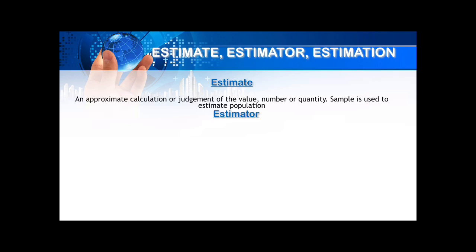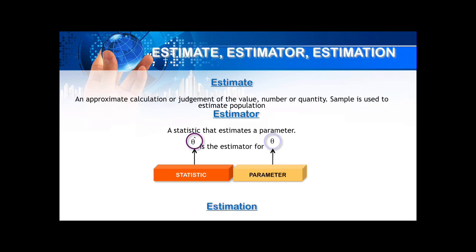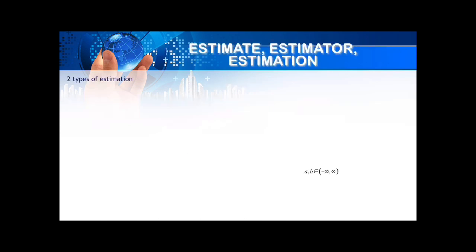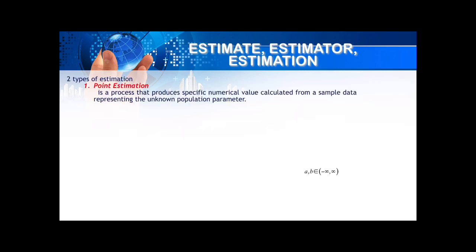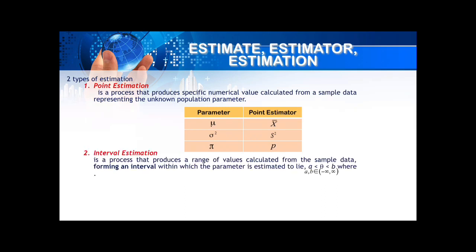What is estimator? Penganggar. An estimator is a statistic that estimates the parameter. And estimation — penganggaran — is the entire process of using an estimator to produce an estimate of the parameter. In estimation, there are two types: point estimation, where we estimate at a single point, and interval estimation, where we estimate within a range.